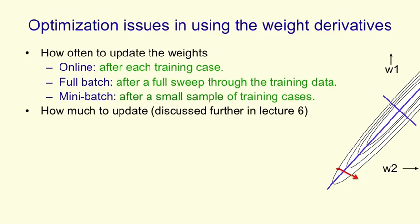So that gives us mini-batch learning, where we take a small random sample of the training cases and we go in that direction. We'll do a little bit of zigzagging, not nearly as much zigzagging as if we did online where we use one training case at a time. And mini-batch learning is what people typically do when they're training big neural networks on big data sets.